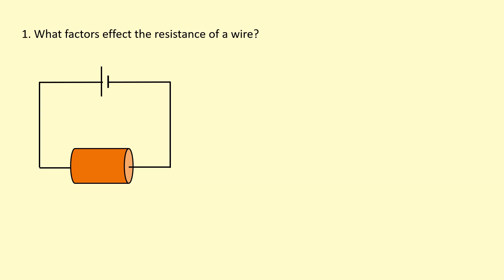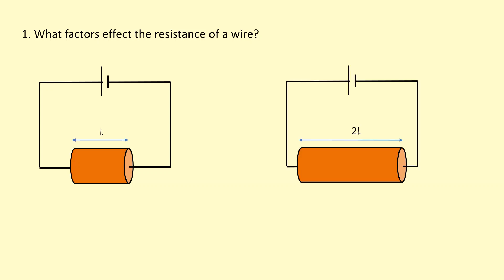What factors affect the resistance of a wire? One of the factors will be its length. Let's say this one has a length L, and another conductor has twice the length. The one on the right will have the highest resistance because the current has to travel twice the distance, giving it twice the resistance.